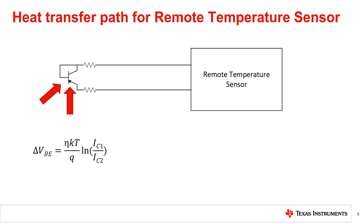Since the remote junction diode or transistor can be easily located close to the heat source, and in cases of processors, GPUs, and FPGAs be placed in the die, the thermal path to the device is not as critical as the electrical path to ensure minimal noise for accurate temperature reading. However, the same rules for placement of local temperature sensors can be applied to discrete transistors when measuring board temperature.